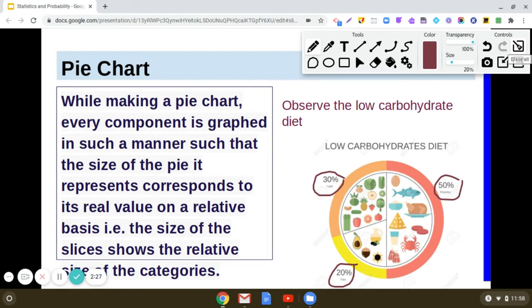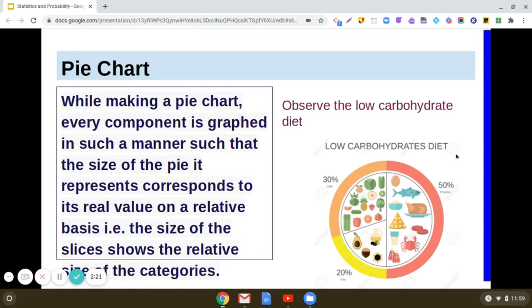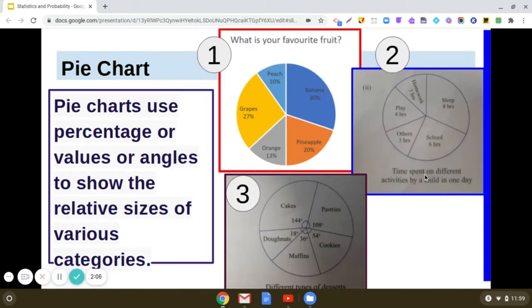While making a pie chart, every component is graphed such that the size of the pie it represents corresponds to its real value on a relative basis, which means the size of the slices shows the relative size of the categories represented.